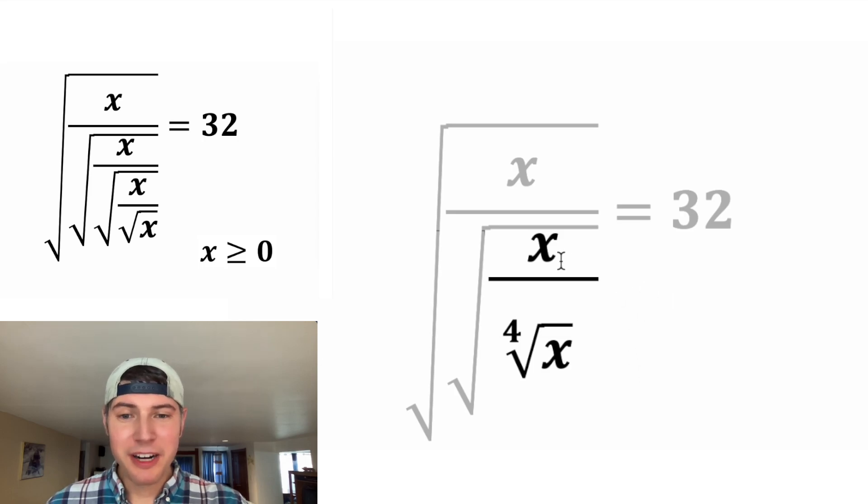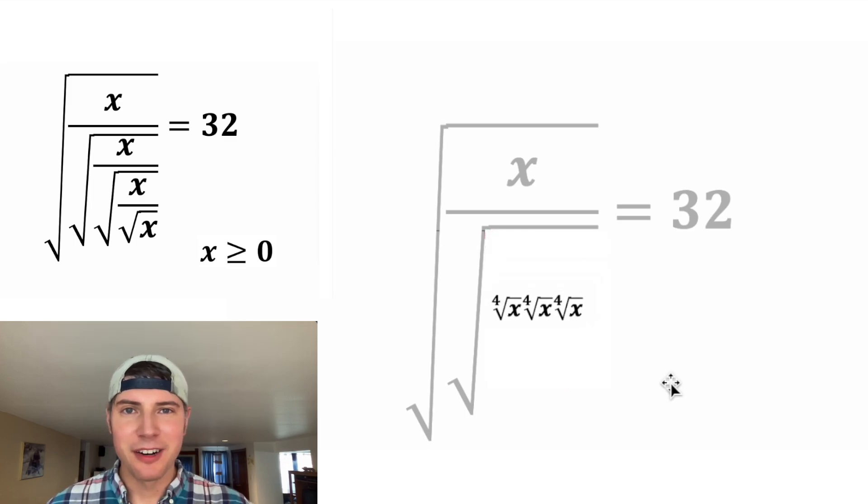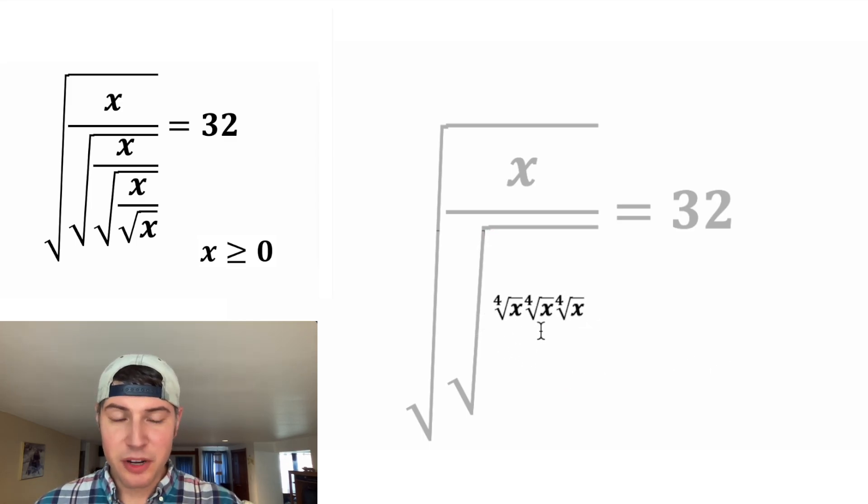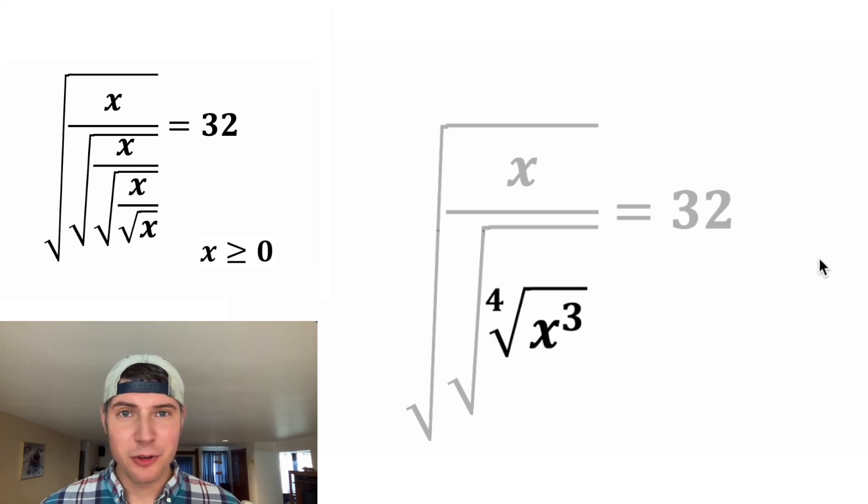Now let's focus on this right here. We can break this x into four fourth roots of x. And then one of these in the numerator will cancel with this one in the denominator. That leaves us with three of these fourth root of x. We can write these three fourth roots of x as fourth root of x cubed.